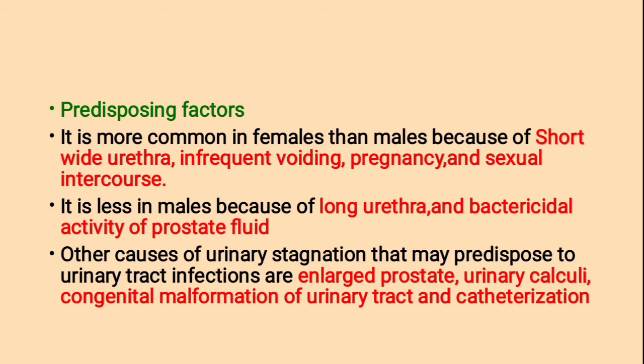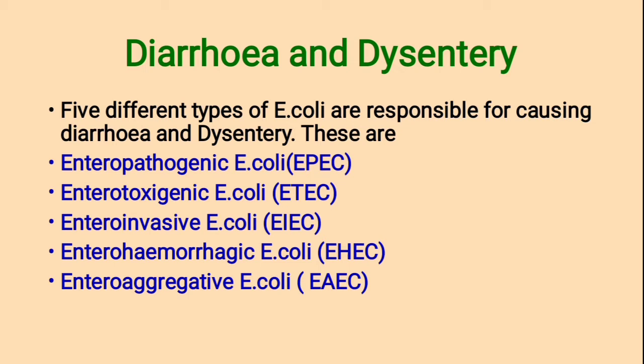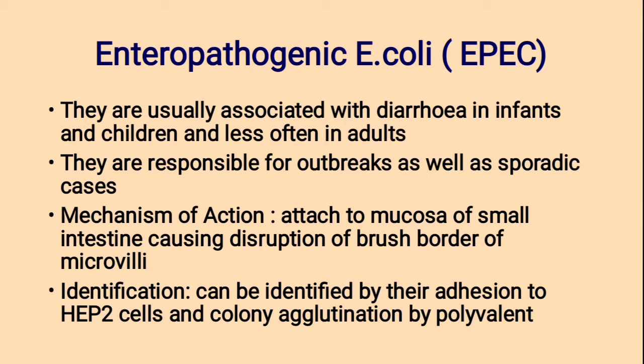Diarrhea and dysentery. Five different types of E. coli are responsible for causing diarrhea and dysentery: 1. Enteropathogenic E. coli (EPEC); 2. Enterotoxigenic E. coli (ETEC); 3. Enteroinvasive E. coli (EIEC); 4. Enterohemorrhagic E. coli (EHEC); 5. Enteroaggregative E. coli. EPEC is usually associated with diarrhea in infants and children and less often in adults; it is responsible for outbreaks as well as sporadic cases.